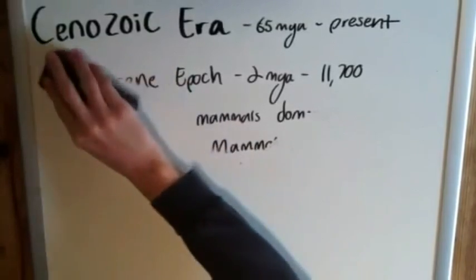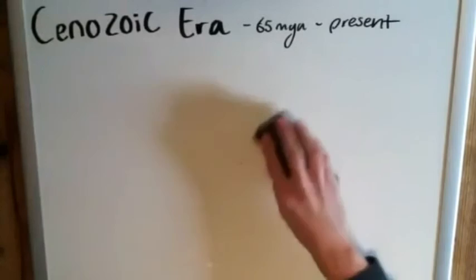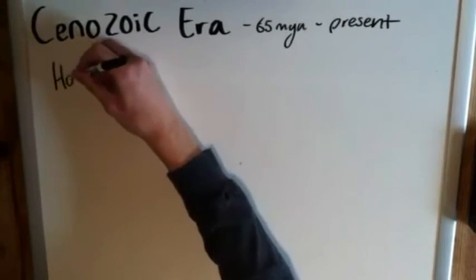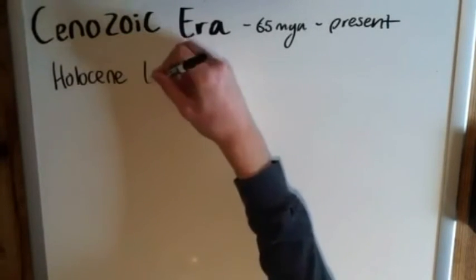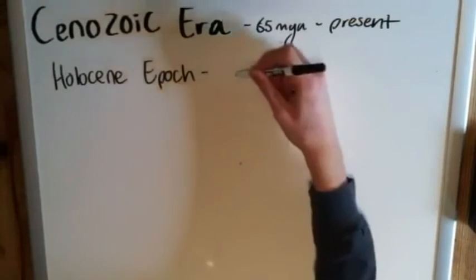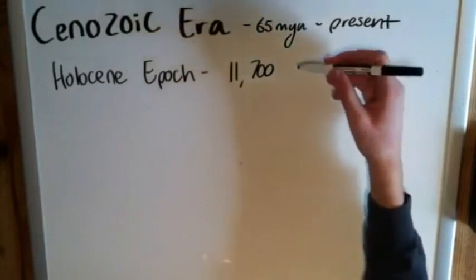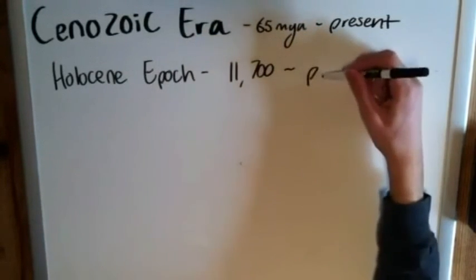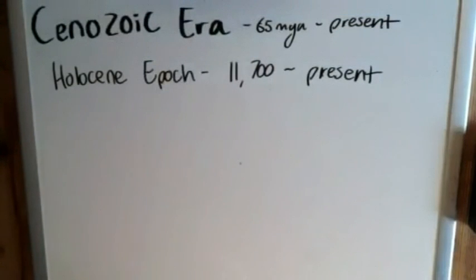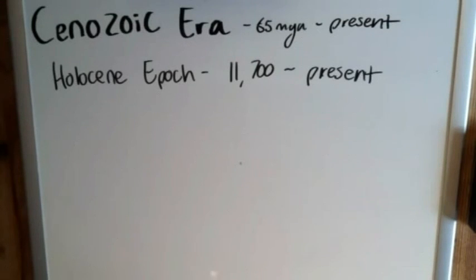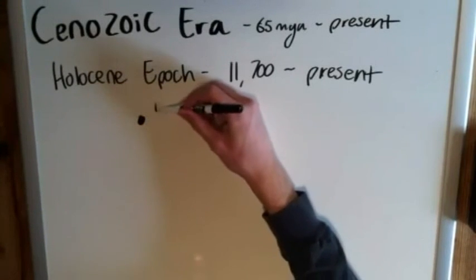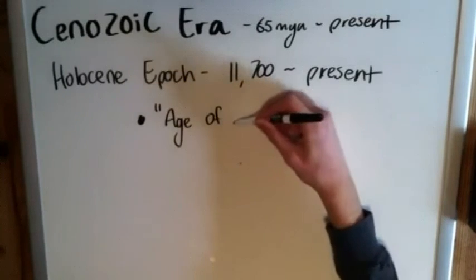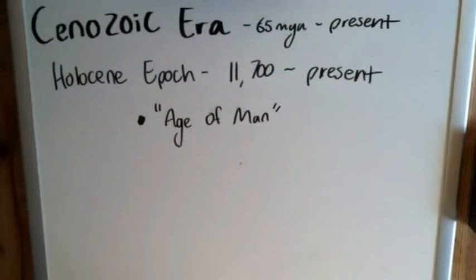That finally brings us up to the Holocene Epoch, which of course is the final one. It ranges from 11,700 years ago to present day, so we are currently living in the Holocene Epoch. It might seem a little silly to divide this one off and have an epoch that spans less than a million years, but the reason we separate it from the Pleistocene is that there is one big important thing: this is the Age of Man, or when written human history begins.